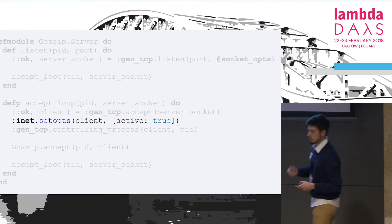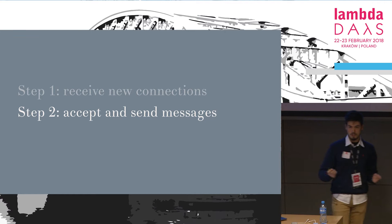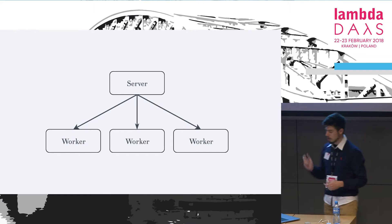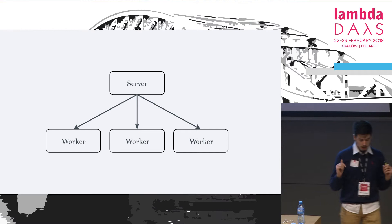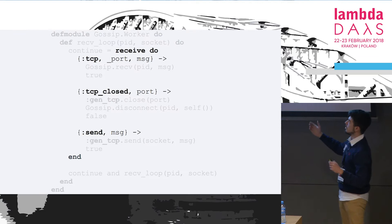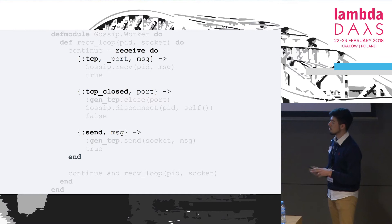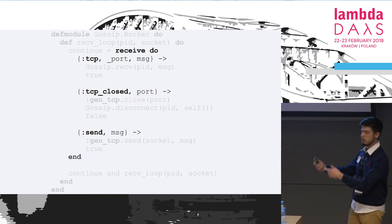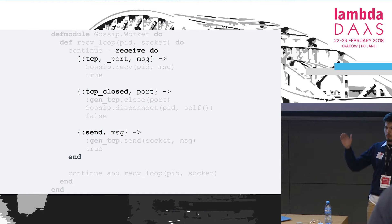Now we're ready for step two — accept and send messages. We spin up workers inside our Raspberry Pi. With that trick you only need one worker. The code for the whole worker is basically a loop with a receive block where you can pattern match for messages. One pattern handles new data from the socket, another handles when the socket is closed, and if you want to send outgoing data you just send a send message. This keeps the logic really simple and in a single process.